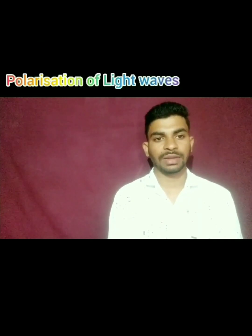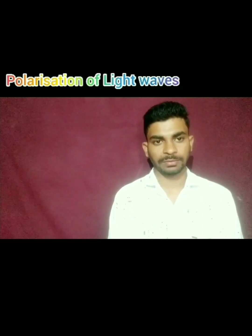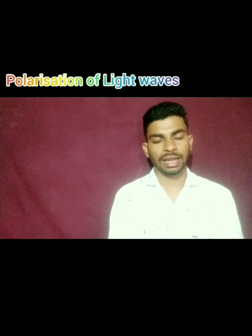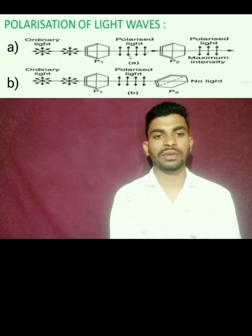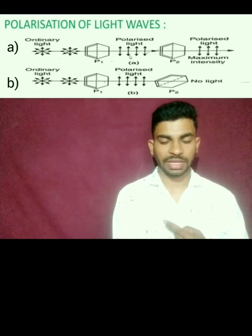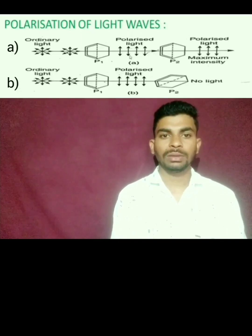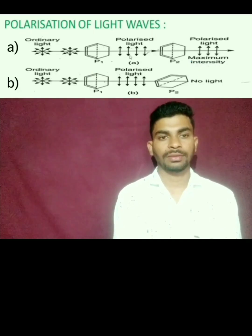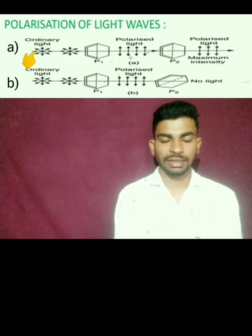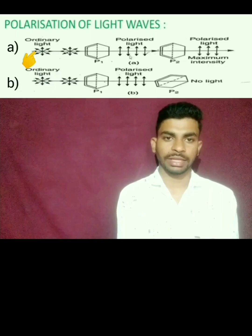Polarization of light waves. To prove this phenomena, we have an experiment. You can see the figure of this experiment. Here, we are taking a pair of two tourmaline crystals, P1 and P2. We are also taking ordinary light. We already know that ordinary light moves in all directions.